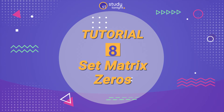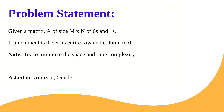Hello everyone, welcome to this tutorial in which we are going to discuss a problem called Set Matrix Zeros. The problem statement is simple: we are given a matrix A of size M cross N, where M is the number of rows and N is the number of columns. It only consists of zeros and ones. If an element is zero, we need to set the entire row and column to zero. The focus is on minimizing space and time complexity — efficiency, not just solving the problem.